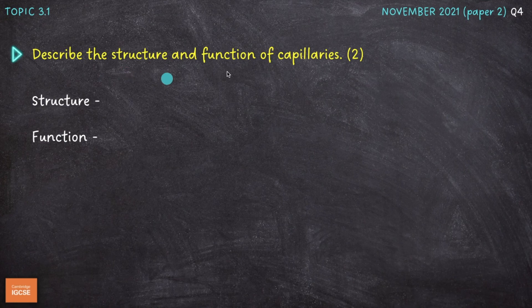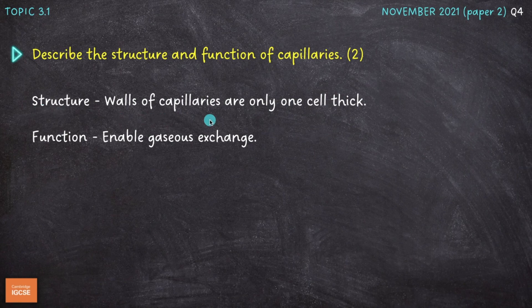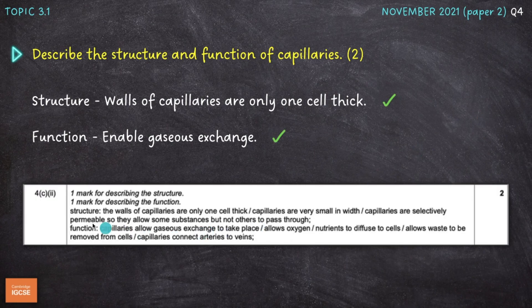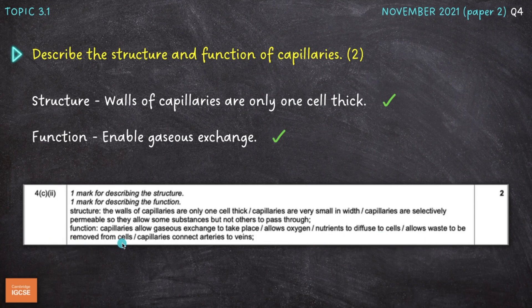Next question: describe the structure and function of capillaries for two marks. For structure: the walls of capillaries are only one cell thick. For function: they enable gaseous exchange — the exchange of carbon dioxide and oxygen. The mark scheme also notes capillaries have a very narrow lumen, are selectively permeable, allow oxygen and nutrients to diffuse into cells, allow waste like carbon dioxide and lactic acid to be removed, and connect arteries to veins.